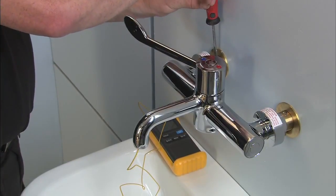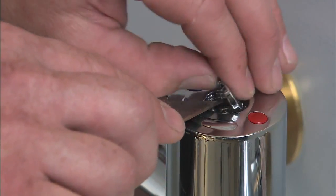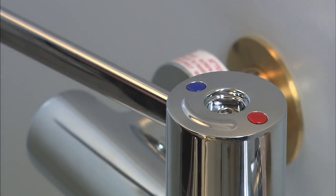To adjust the maximum blend temperature, first remove the lever by prying out the cover button and unscrewing the retaining screw with a 4 millimeter Allen key.